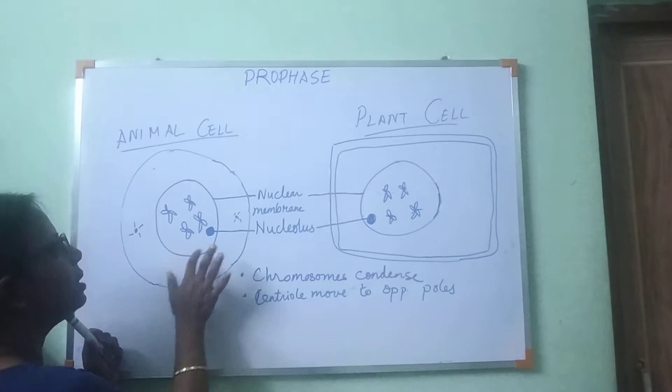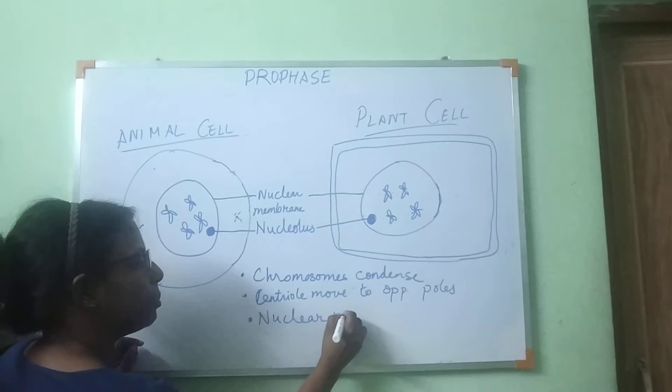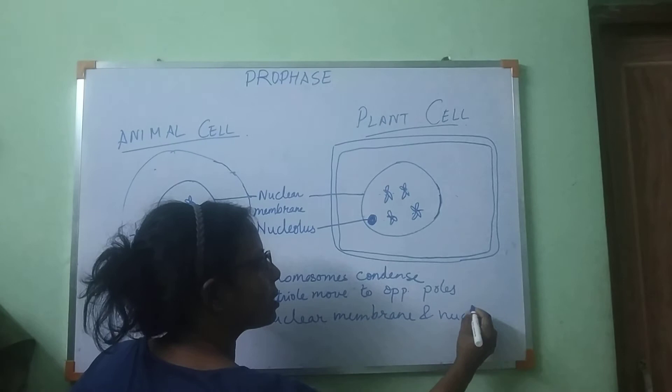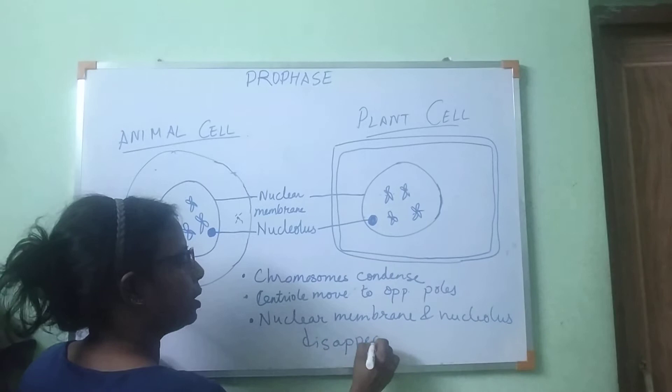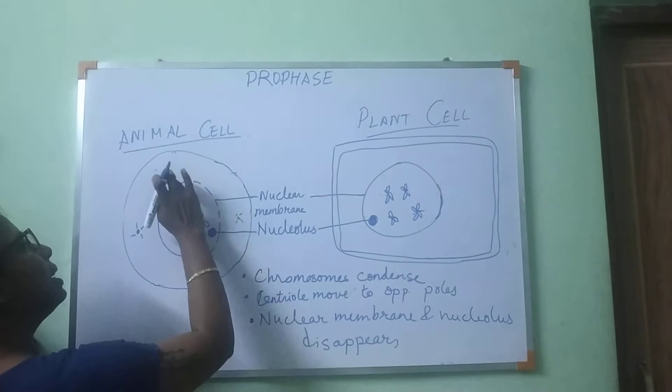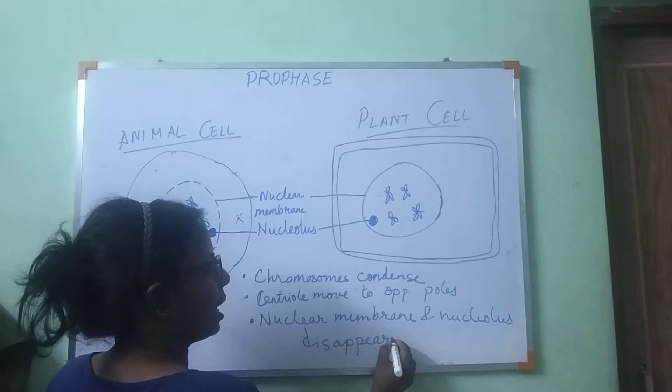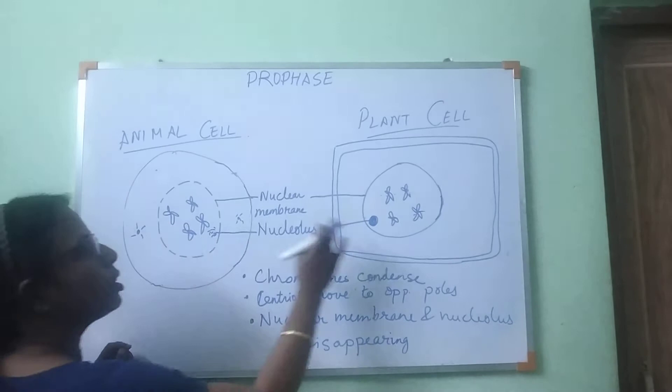The nuclear membrane and nucleolus disappear. It gradually becomes lesser and lesser until there is no nuclear membrane — it is in the process of disappearing. This is how the nucleolus looks and the nuclear membrane is disappearing.